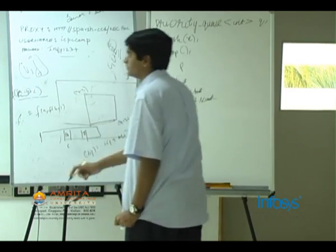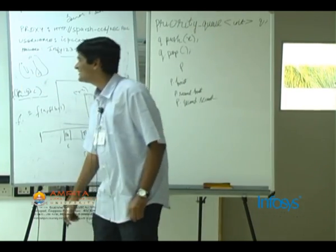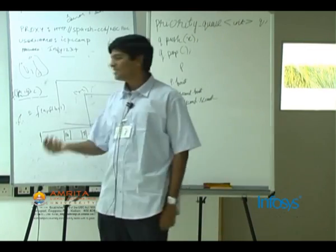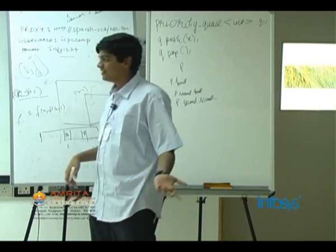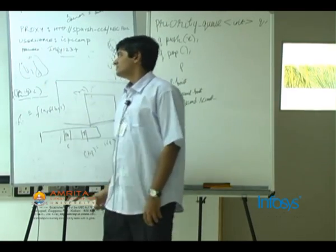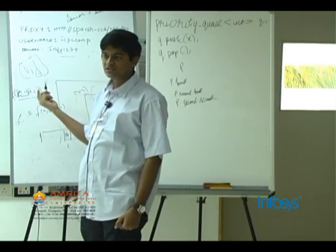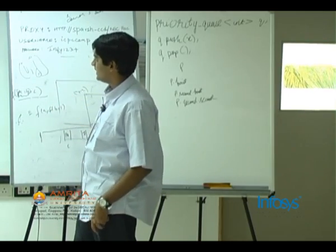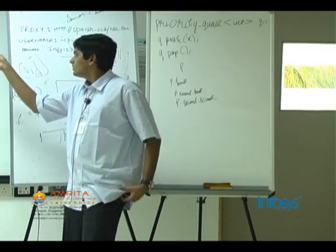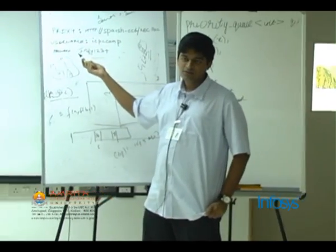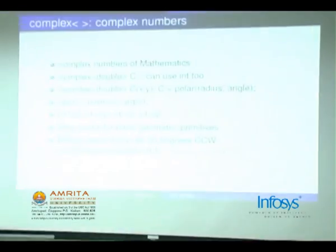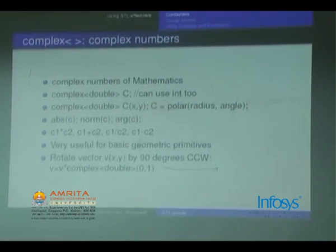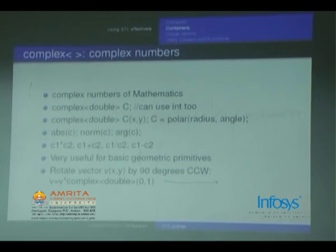For example, `double x = p.first`. Complex numbers are basically used for complex numbers in mathematics — you don't have to write all the complex functions. So `complex<double> c` — you can use `int` also if all your complex numbers are just integers. `complex<double> c(x, y)` will initialize c such that the basic format is radius comma angle. In the imaginary plane, if you know the radius and the angle, you know the coordinates. The default initialization `(x, y)` represents x + iy, but you can also initialize it as `polar(radius, angle)`.